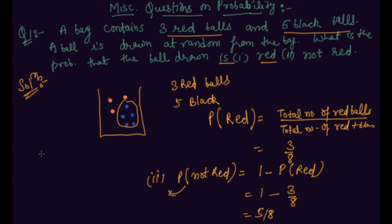And there is one alternative method also for this. Alternatively, you can solve this question by probability of not red means probability of black.